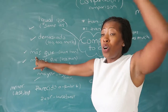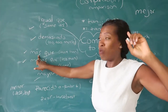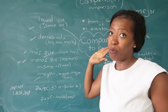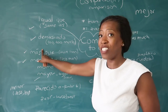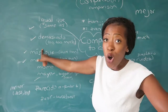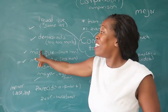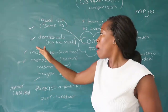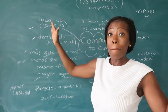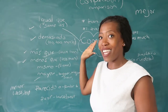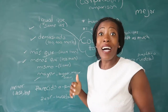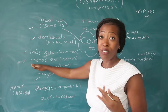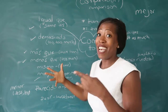For example: es más alto que tú — he's taller than you. You can insert any adjective between más and que: más guapo — more handsome than you; más inteligente que — more intelligent than you; más interesante que — more interesting than. With menos you do exactly the same but you're saying 'less than.'